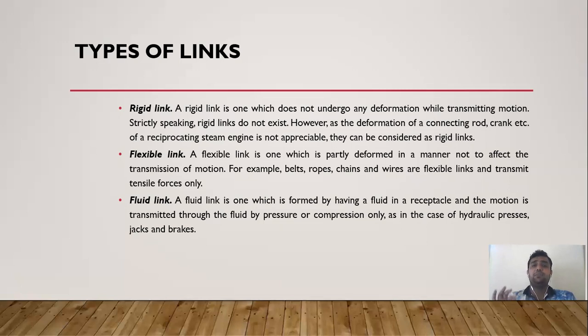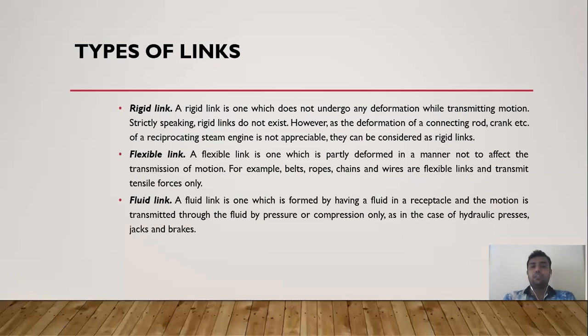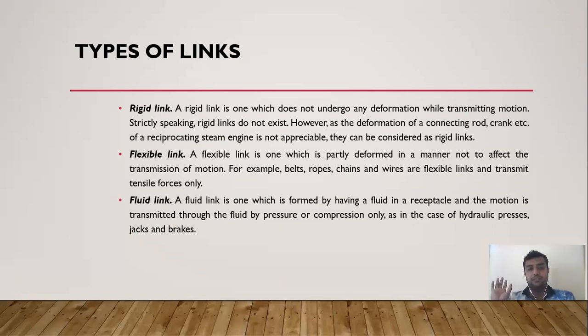A flexible link is one which partially deforms in a manner that does not affect the transmission of motion. Examples of flexible links are belts, ropes, chains, and wires. Flexible links transmit tensile force only.